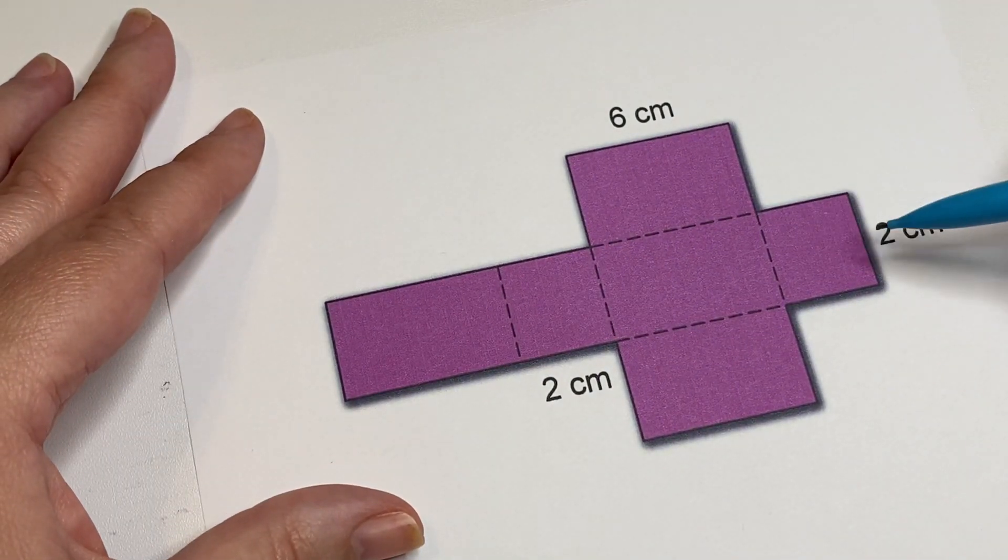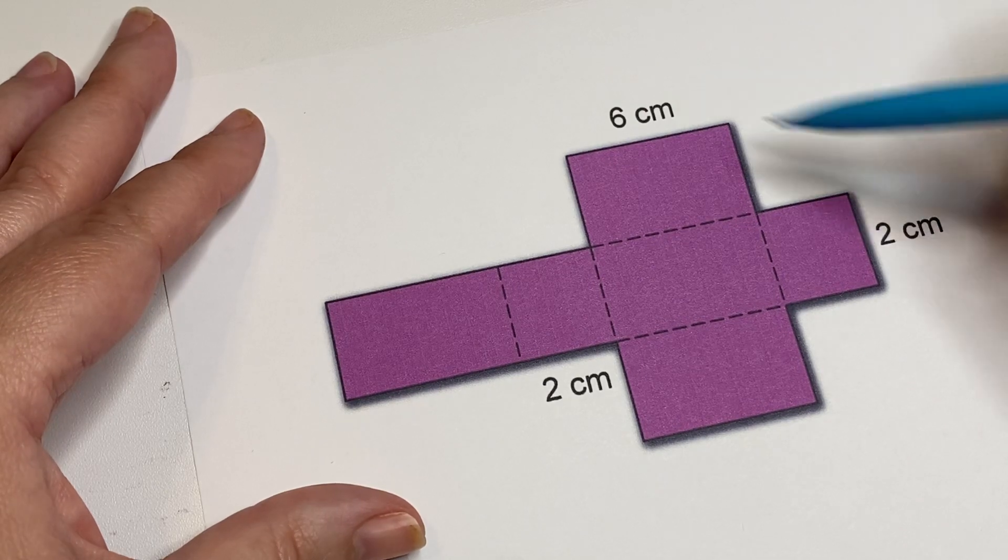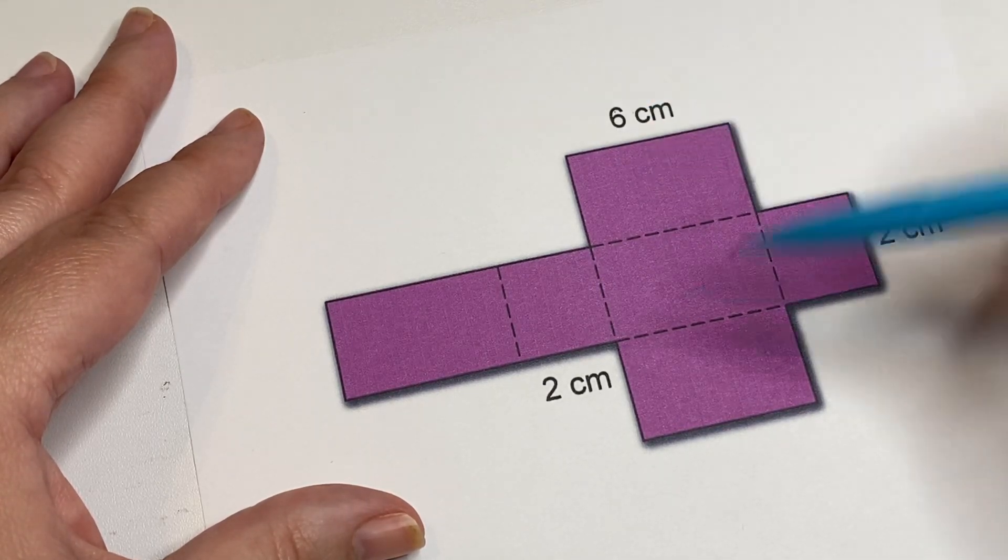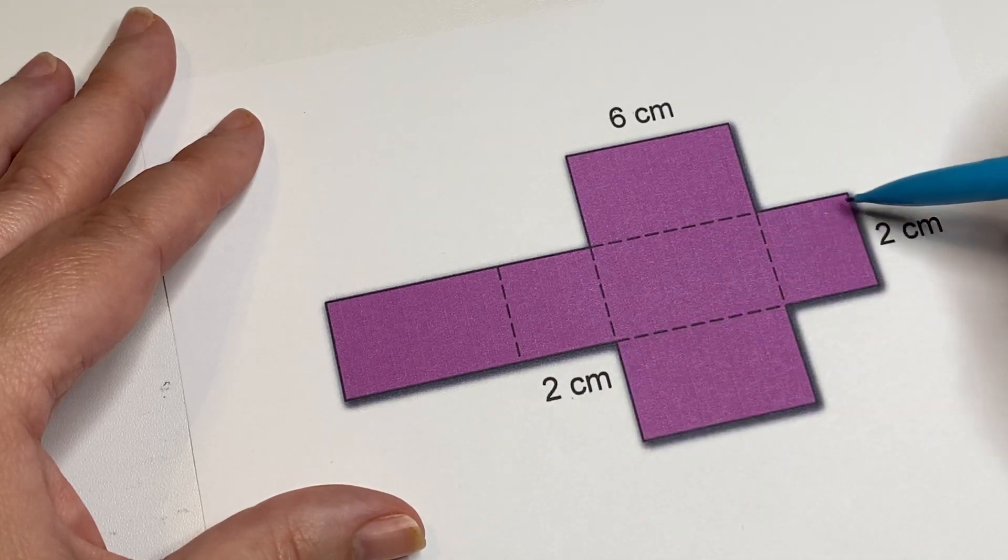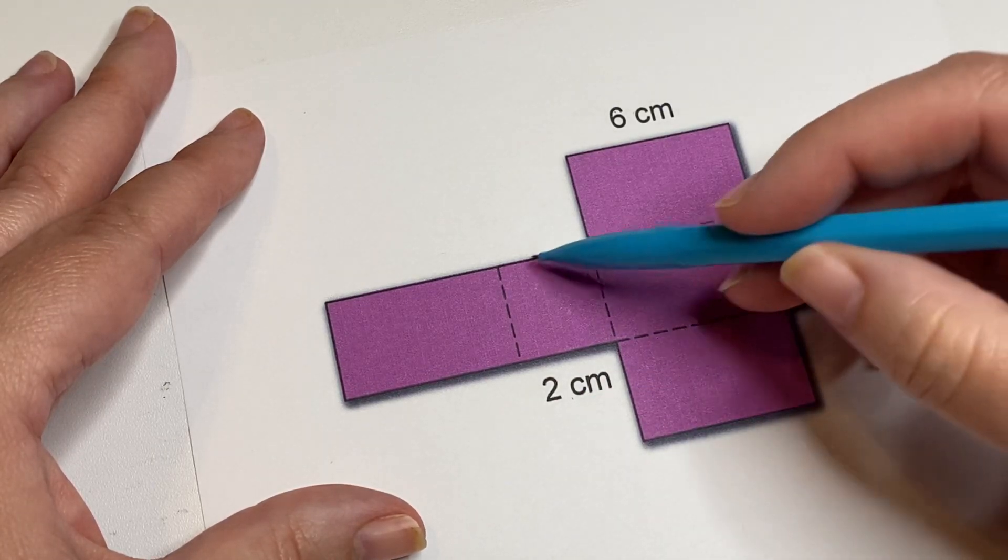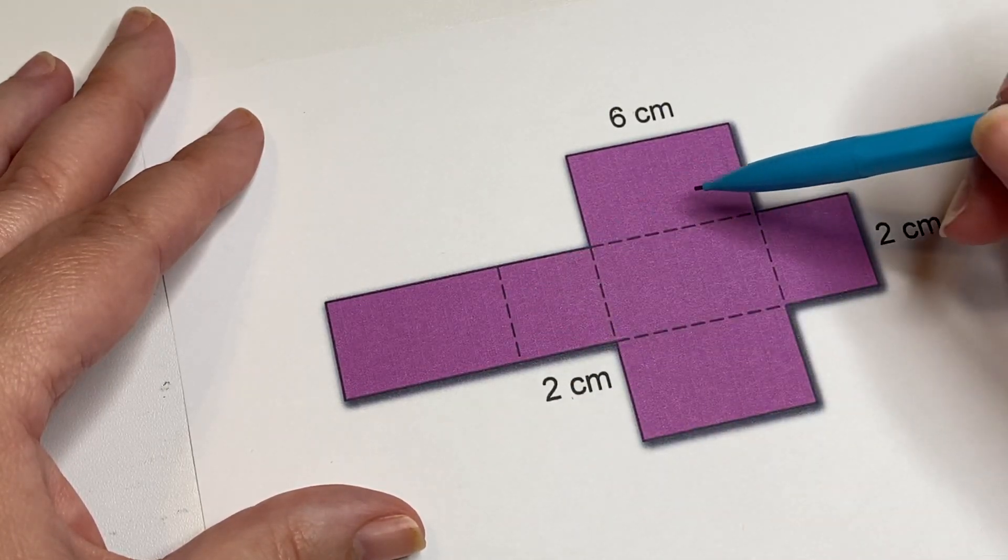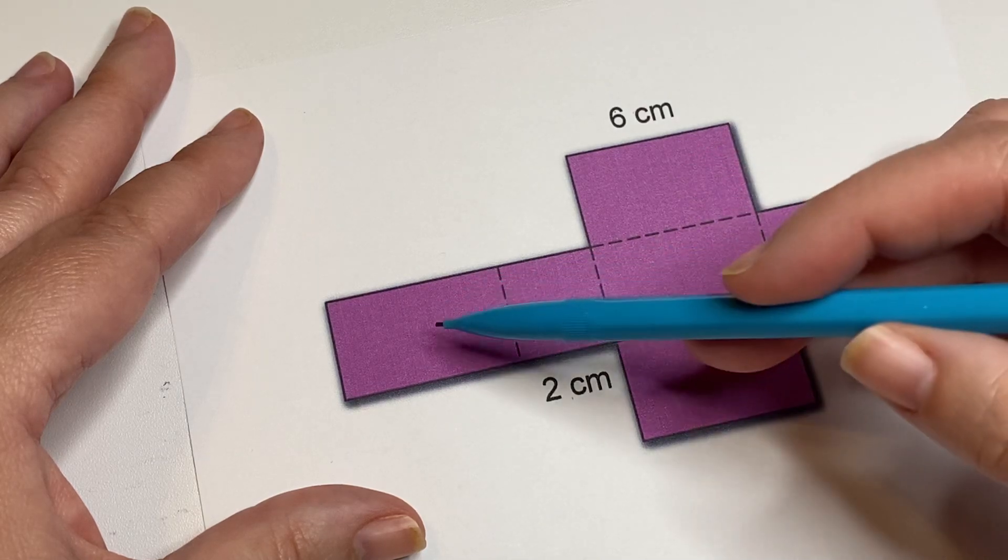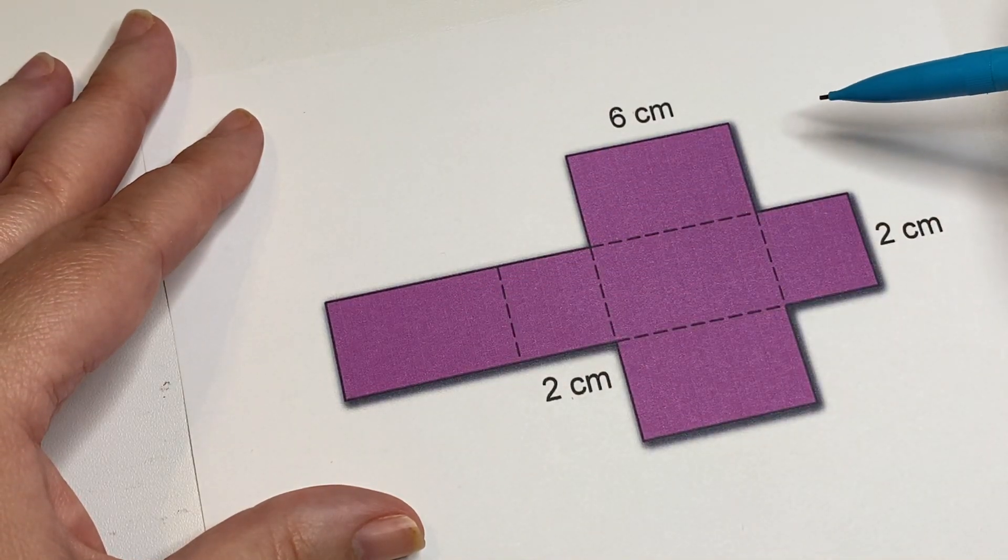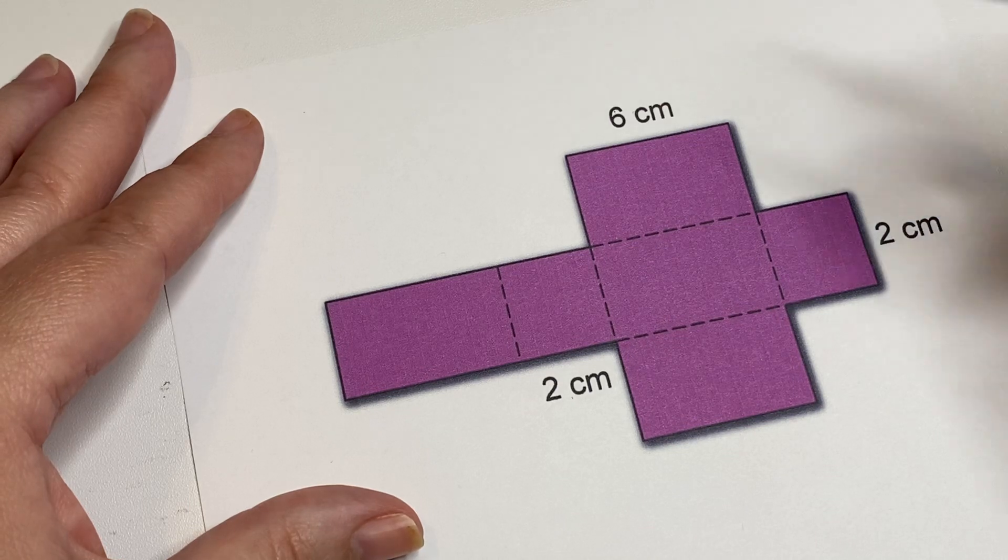You'll see here that there are two different lengths. We've got 2 and 6, and this is also 2. So we have squares—this is a square and this is a square—and then we have these rectangles. What we have to do to find the surface area...